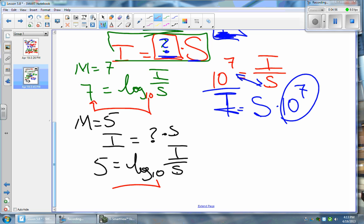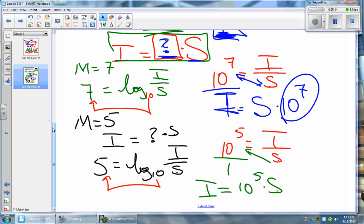You know that this is base 10. So we can go 10 to the power of 5 equals I over S. We can cross multiply this puppy right there, leaving you I equals 10 to the 5 times S. Now look at this. So the magnitude 5 earthquake was here. The magnitude 7 earthquake was here compared to the standard.